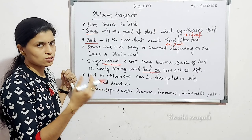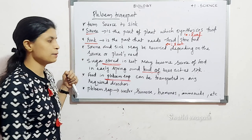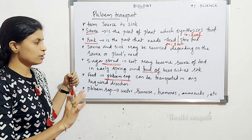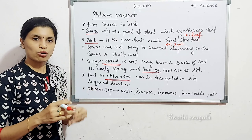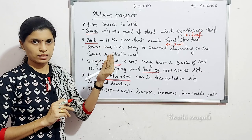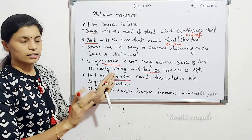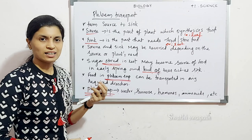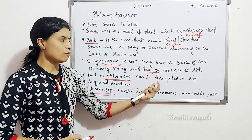It may be reversed depending on the plant's need. Next point: food in phloem sap. The phloem sap can be transported in any required direction, unlike xylem transport. Phloem sap mainly contains water, the prepared food which is sucrose, some hormones, and amino acids.